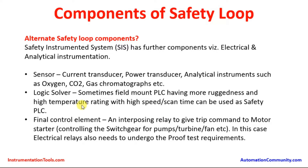Alternate safety loop components: the Safety Instrumented System also includes electrical and analytical instrumentation. Earlier we saw process-related sensors and final elements, but there are other components as well. For sensors, there are current transducers, power transducers, and analytical instruments such as oxygen analyzers, CO2 measurement devices, and gas chromatographs. These are used in refineries, petrochemicals, and other chemical industries.